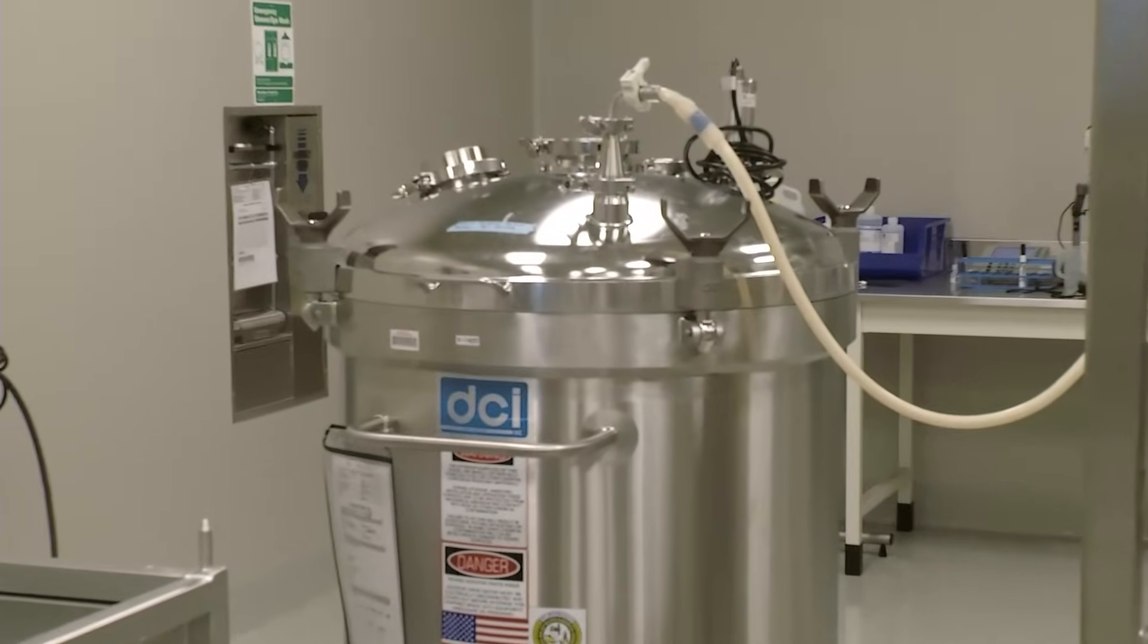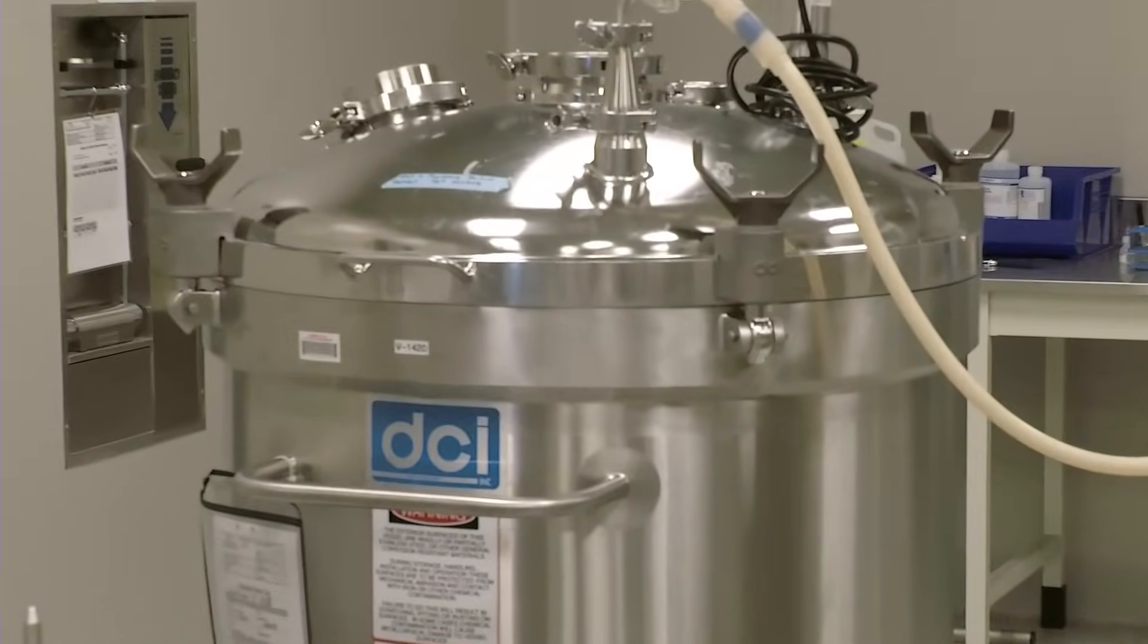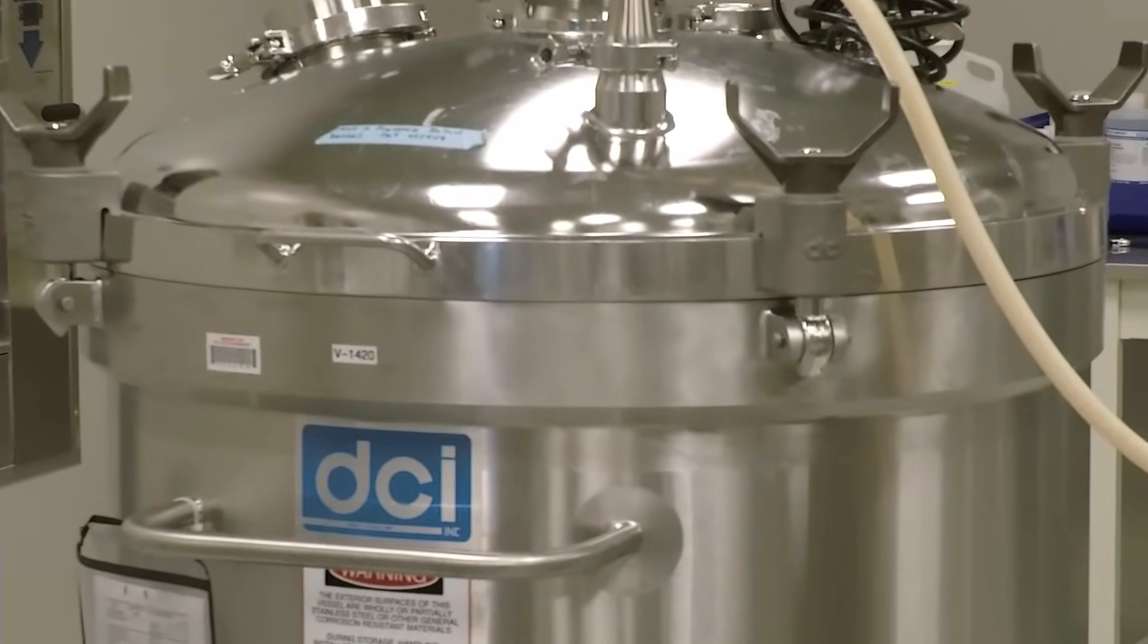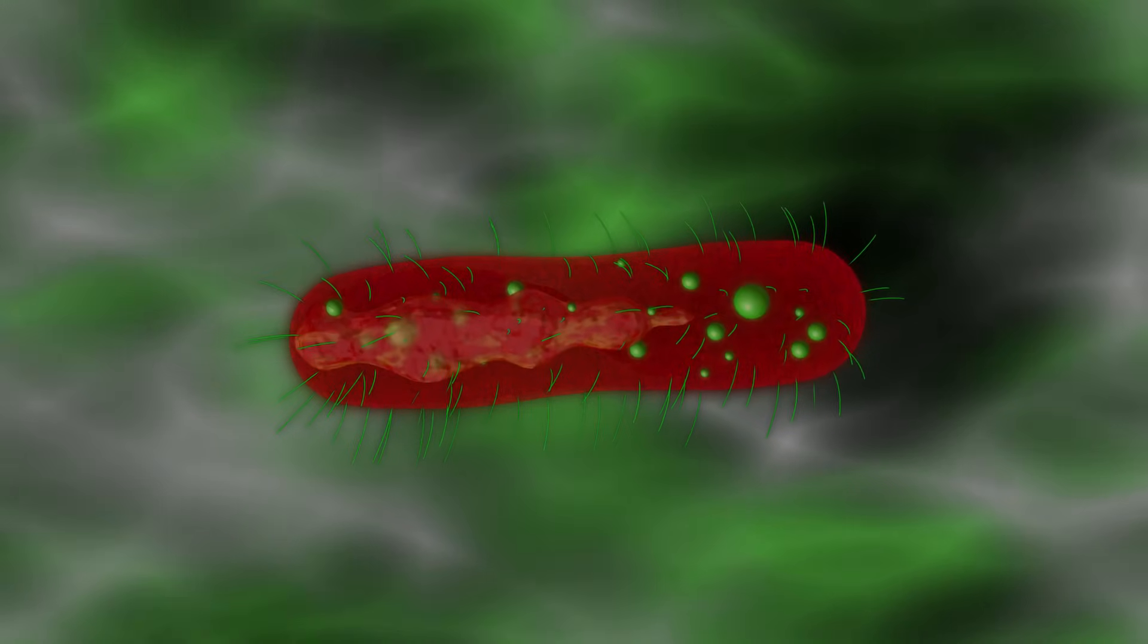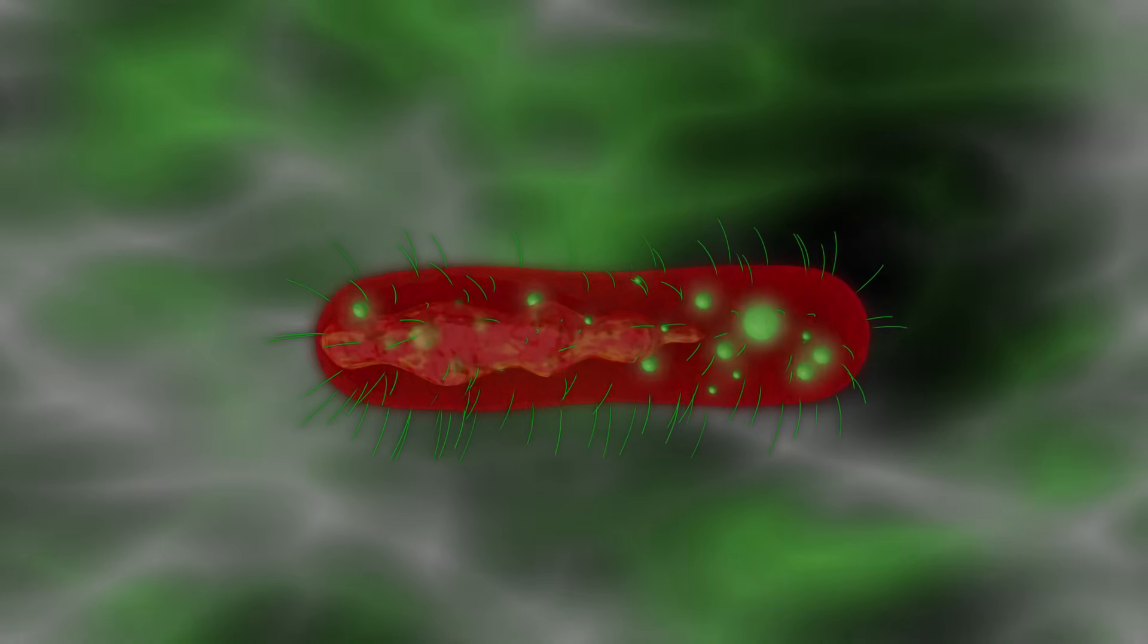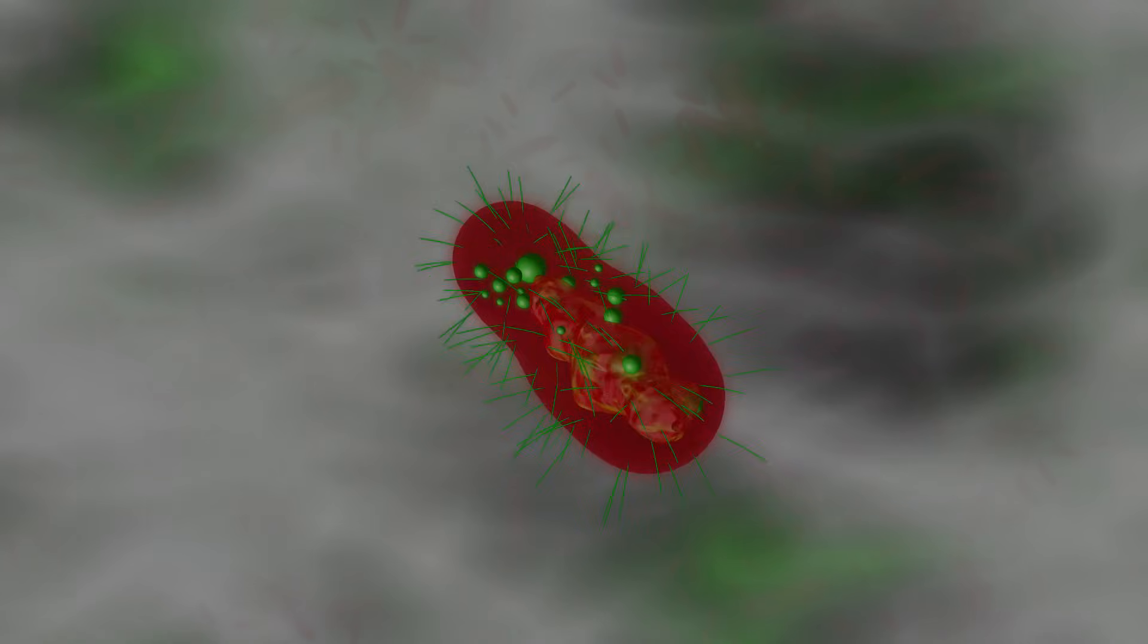The final product of fermentation is called broth. Broth contains the molecule of interest. However, the molecule is still locked inside a host cell, and millions of these host cells are suspended in a pool of depleted media and metabolic waste products. In the next step, recovery, we perform two important functions: separating the cell solids from the broth liquid and separating the molecules of interest from their host cells.